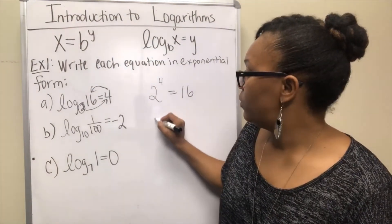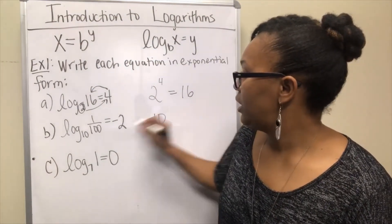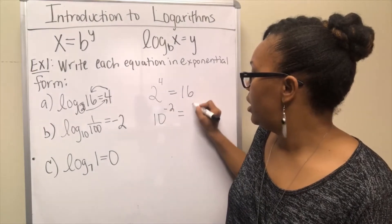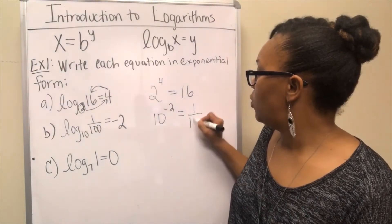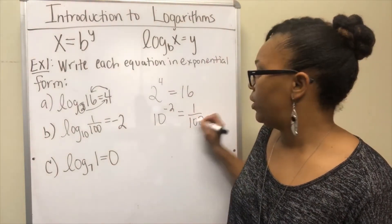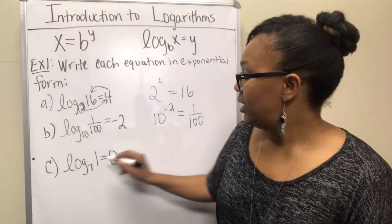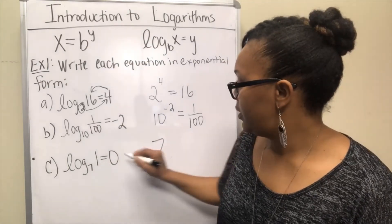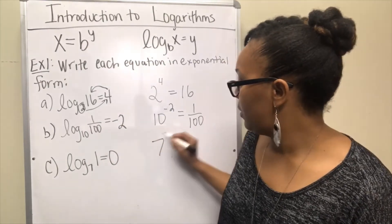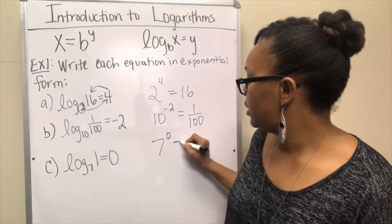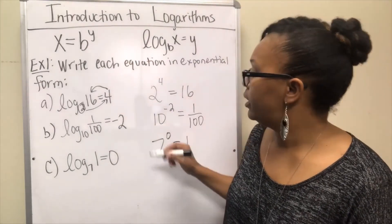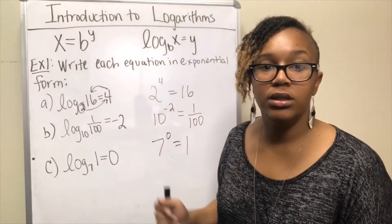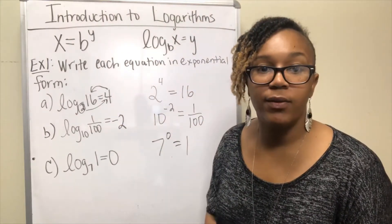For this one, the base is 10, the exponent is negative 2, and that equals 1 over 100. For this one, the base is 7, the exponent is 0, and that equals 1. So these are the equivalent exponential forms to those logarithmic forms.